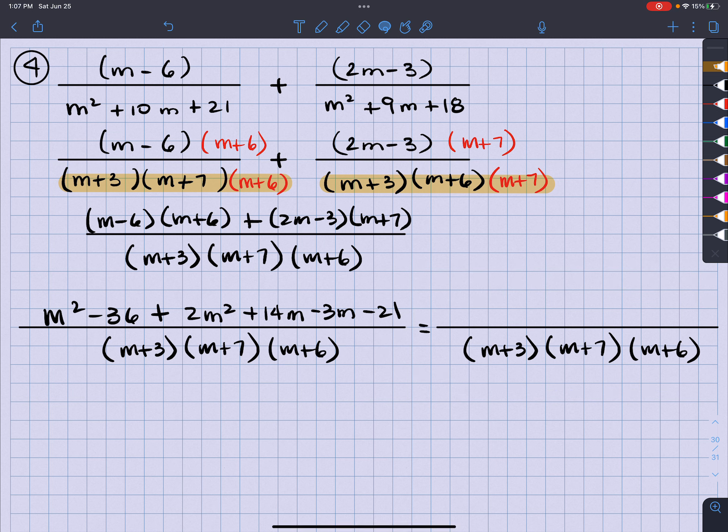Just like a glove. All right. So let's see if we have like terms here. I got M squared and 2M squared, which gives me 3M squared. We have 14M and negative 3M, which gives me a plus 11M. And then I got the negative 36 and negative 21. That's going to give me a negative 57.